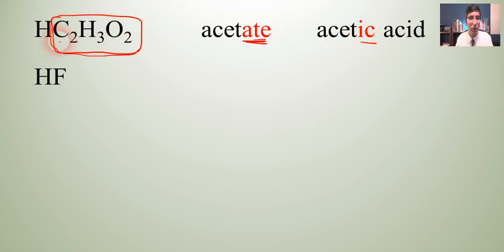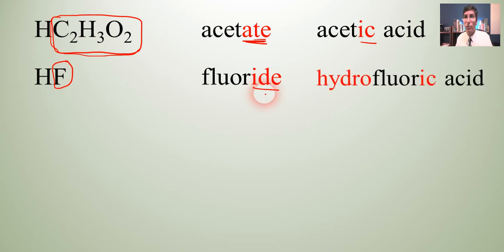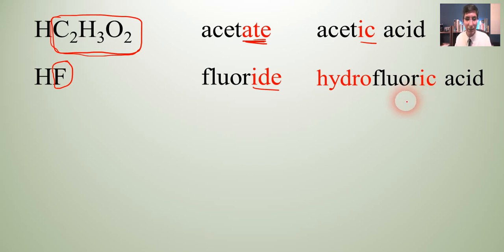Let's try another example: HF. We're just focusing on the name of F, and that anion is fluoride. It ends with I-D-E. So the rule is: if it ends with I-D-E, we drop the I-D-E, put 'hydro' on the beginning and '-ic' on the end. So that becomes hydrofluoric acid.